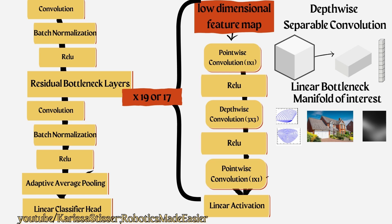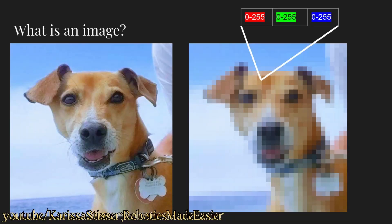We have a manifold of interest because when you look at the image that gets sent through, we wouldn't actually send any image through. So let's look at what is an image. An image is a series of pixels of a certain width and height, where each pixel has a red, green, and blue value between 0 and 255.